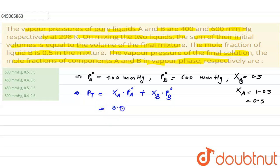Mole fraction of A is 0.5, pressure of pure A that is 400, plus mole fraction of B that is 0.5 into 600, is equal to 500 mmHg. This is the total pressure.